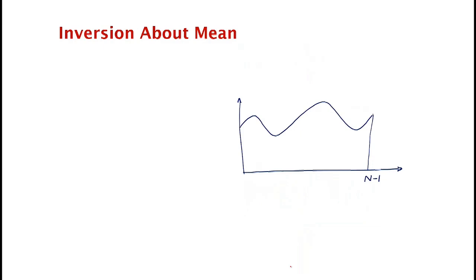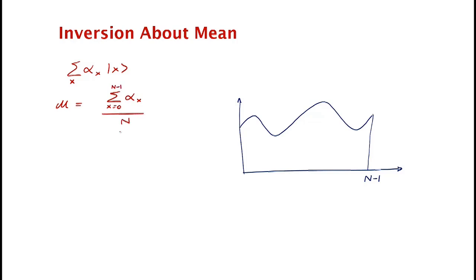The second operation is called inversion about the mean. We start with a superposition sum of alpha_x |x⟩ over all x. We let mu be the mean — it's the summation of alpha_x divided by n — so it's just the average value of all the amplitudes.